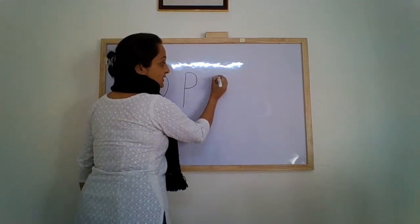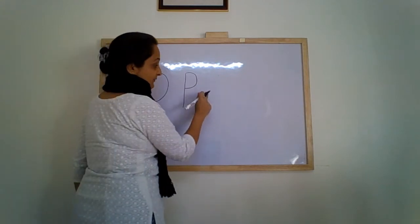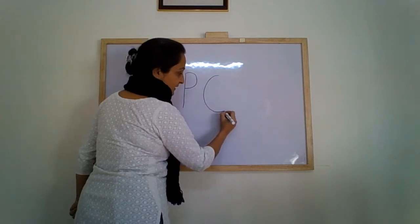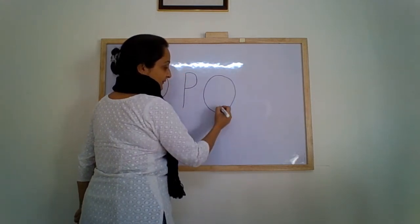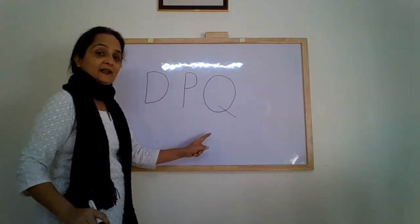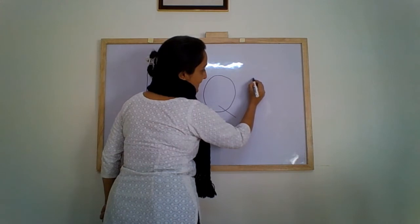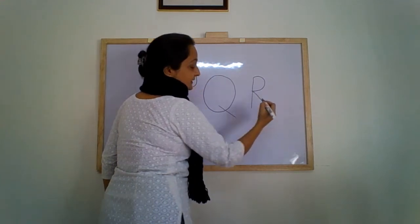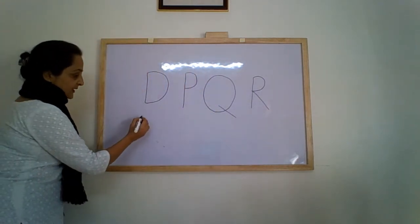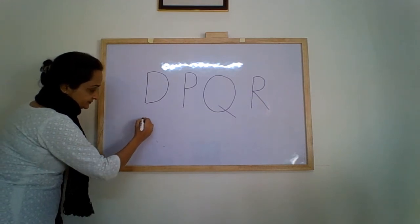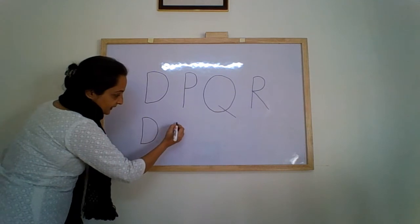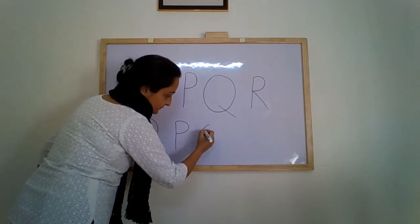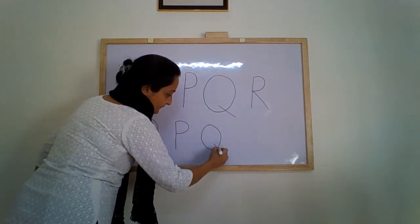Next is Q. You start from the top — don't start from the sides or from below. From up, you go down, make a semi-circle and close it again, with a slanting line out — that is letter Q. And the last letter is R: standing line, a small forward curve, and a slanting line forward — R. Once again: D, P, Q and R.